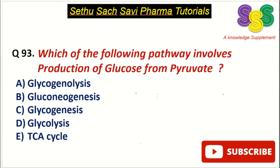Hello everyone, welcome back to the question answer discussion session. Today's question is from biochemistry: which of the following pathways involves the production of glucose from pyruvate? Choice A: glycogenolysis, B: gluconeogenesis, C: glycogenesis, D: glycolysis, and E: TCA cycle.